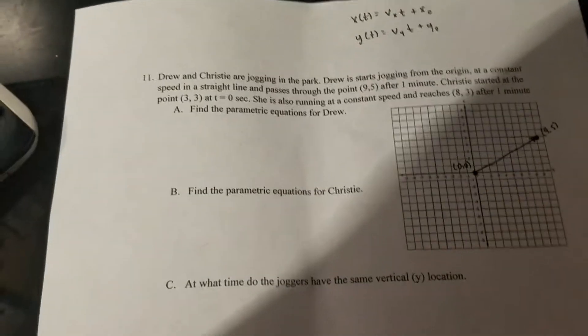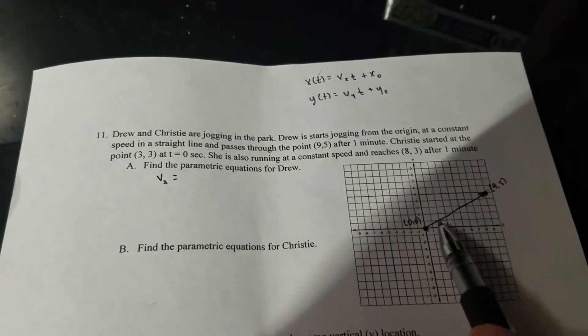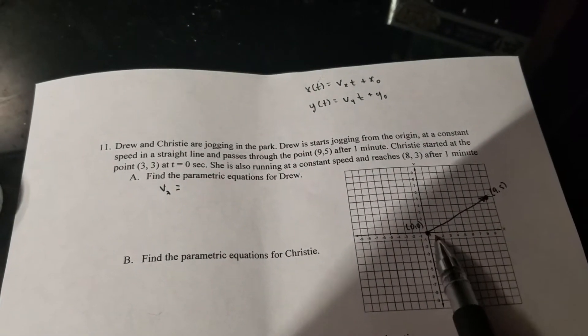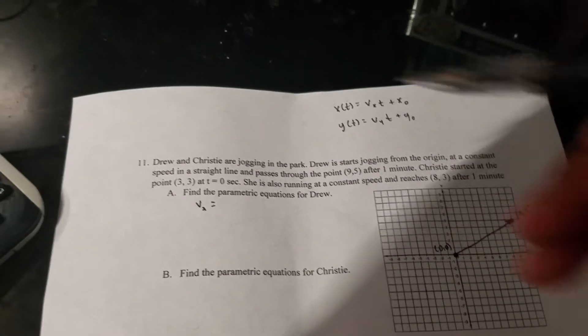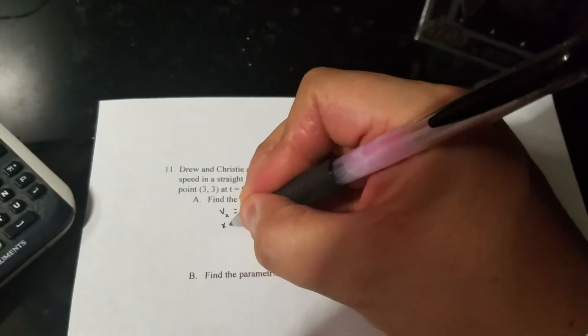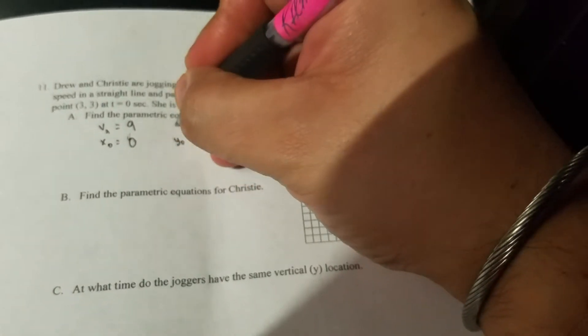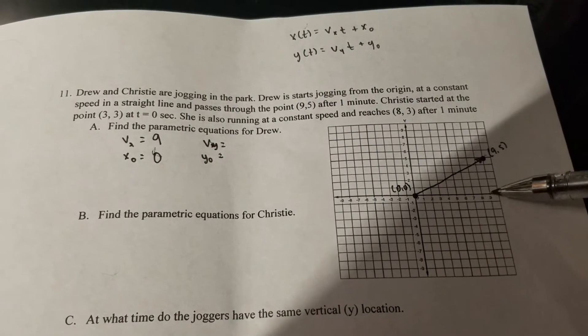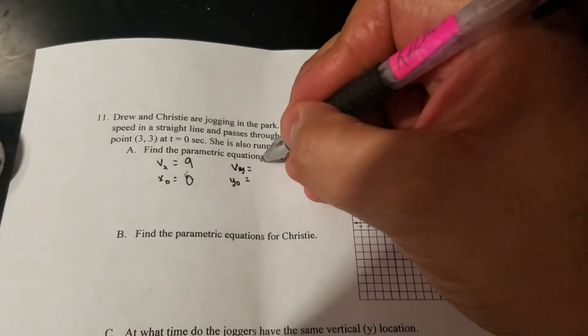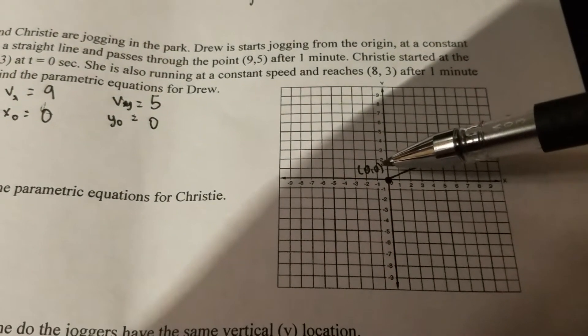First thing's asking me to make parametric equations for Drew so these are my equations up here so I need my vx which is how far I moved this way in the x direction. In the x direction I'm one two three four five six seven eight nine to get to this point. So vx is nine and my x initial is where did I start in the x, this is the y, so the x I started at zero. We're going to do the same for the y. So vy is how far up did I move from my original point, I moved one two three four five up in the y direction and I did start at zero zero so my initial y is also zero.